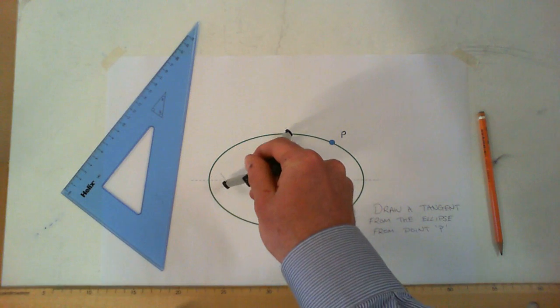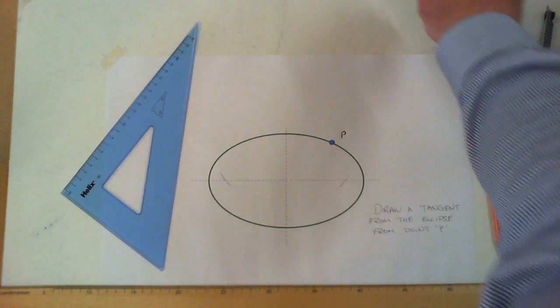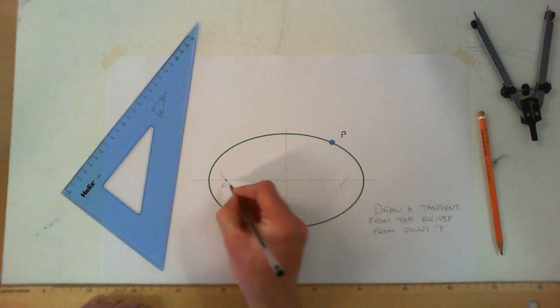We strike an arc to the left and the right, and where it hits our central axis, our major axis left and right, are our two focal points. Just label those as F1 and F2.